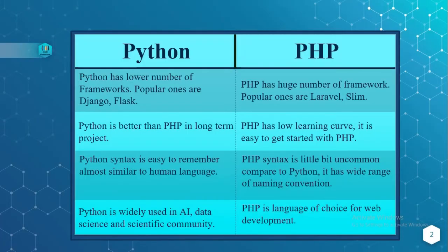Now let's move on to the differences. The first difference is that Python has a lower number of frameworks — the popular ones are Django and Flask — whereas PHP has a huge number of frameworks, with popular ones being Laravel and Slim.